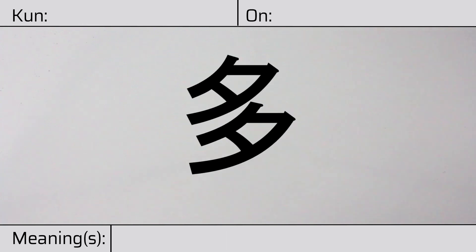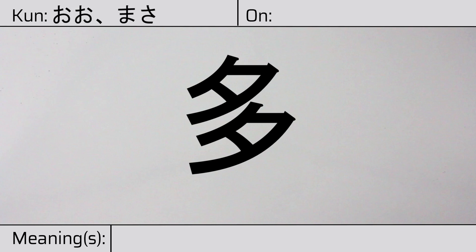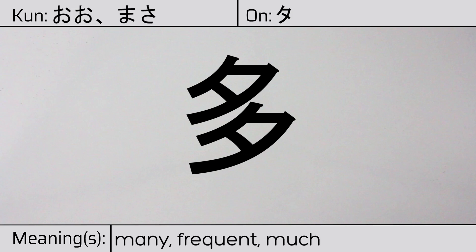Welcome to this lesson on Japanese kanji. Today, we'll be discussing this character. This kanji has kunyomi, or Japanese readings of o or masa. And it has an onyomi, or Chinese reading of ta. This character has the meanings many, frequent, or much.